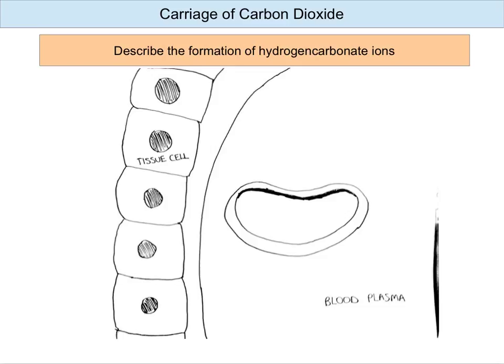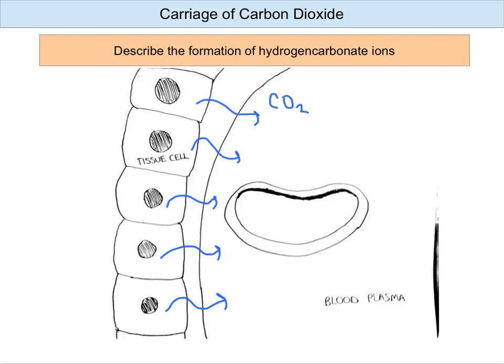This diagram shows a column of tissue cells and a capillary blood vessel. In the capillary, you've got erythrocytes, or red blood cells, flowing through, surrounded by the blood plasma. As the tissue cells respire, they produce carbon dioxide and water. The carbon dioxide is found in a higher concentration inside the tissue cell and a lower concentration inside the blood. So carbon dioxide diffuses from high to low concentration: 5% dissolves directly in the blood plasma, 10% binds to haemoglobin inside red blood cells to form carbaminohaemoglobin, and the remaining 85% forms hydrogen carbonate ions.